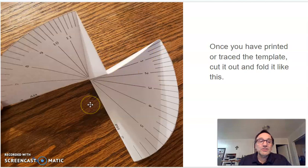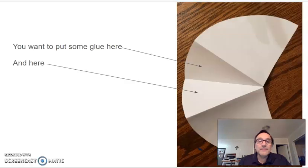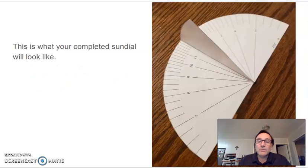Okay, and then you're going to flip it over on the back and you're going to put some glue over here so you can glue those two sides together. You're going to stick those together and flip it over, and this is what your sundial is going to look like.